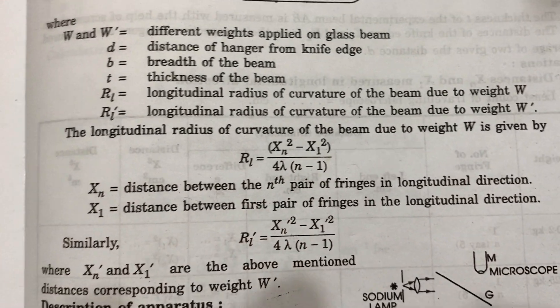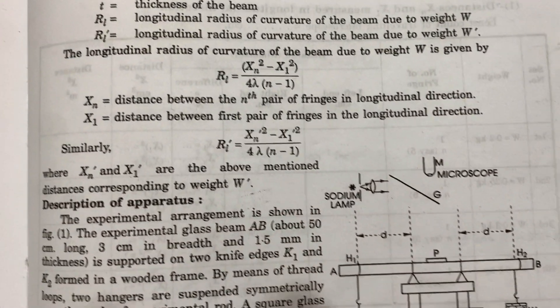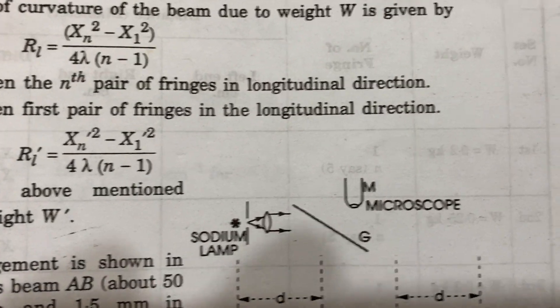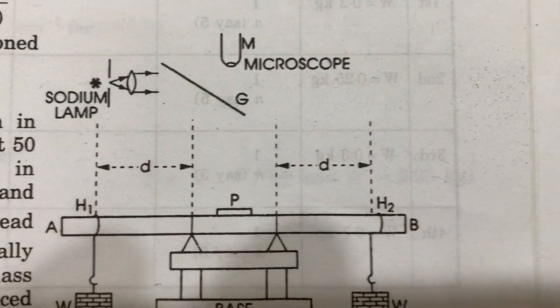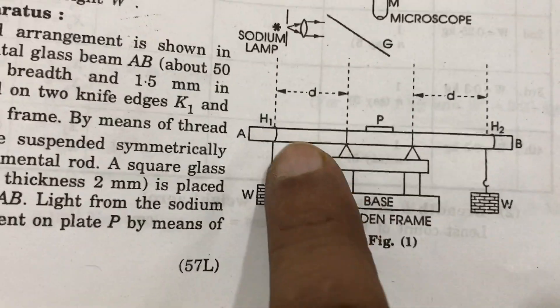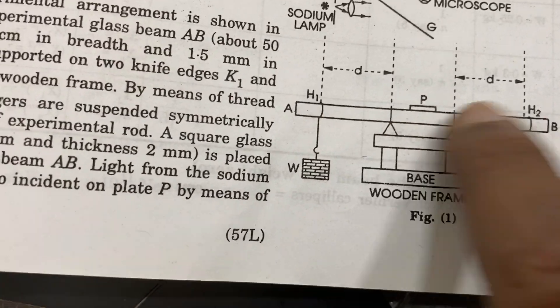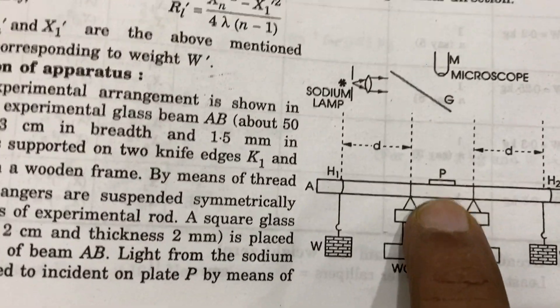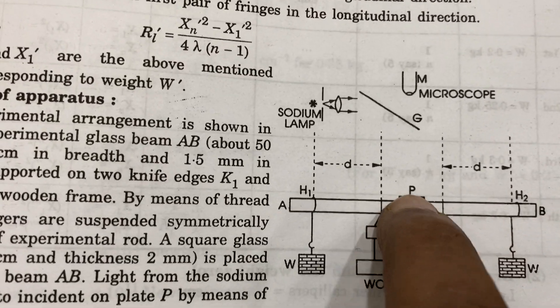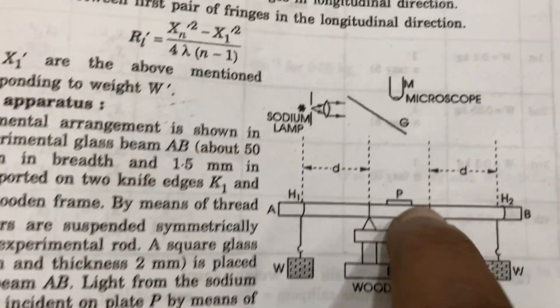It requires a microscope, sodium lamp, and the plates. In this setup, the book says one glass plate at the bottom and then one plate on the top. But we have practically found that if we put the smaller glass plate below and then put the weight on the side, the fringes are visible easily like this.